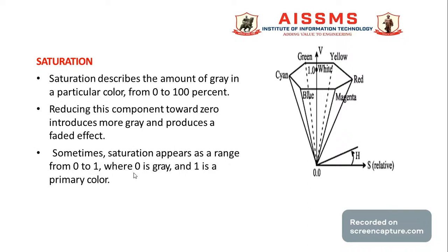Saturation describes the amount of gray in a particular color, expressed from 0 to 100 percent. Reducing saturation towards 0 introduces more gray and produces a faded effect. Sometimes saturation appears as a range from 0 to 1, where 0 is gray and 1 is the primary color.